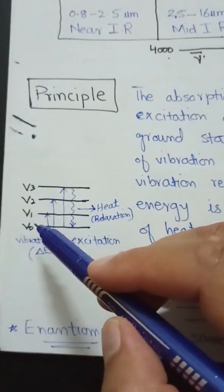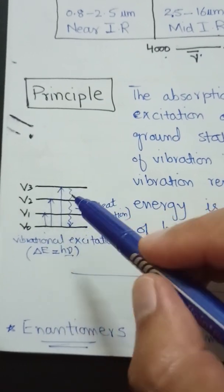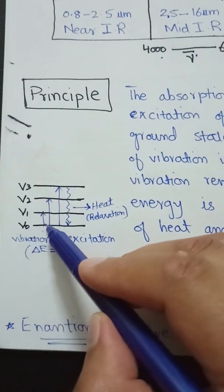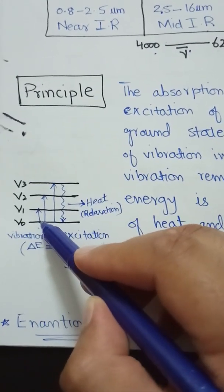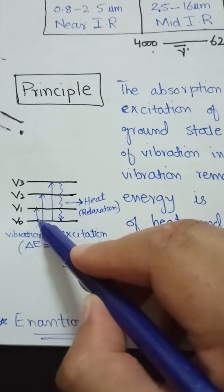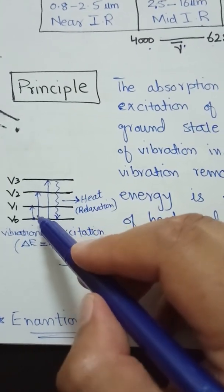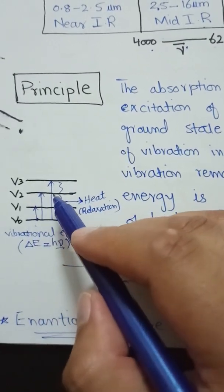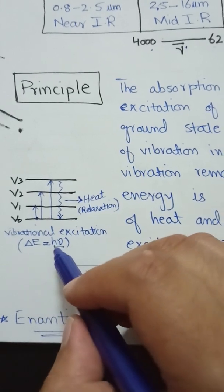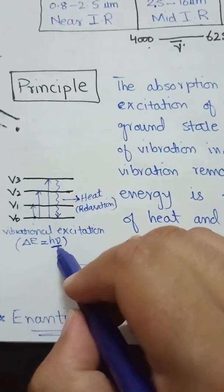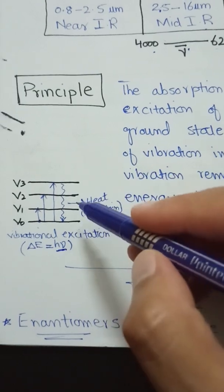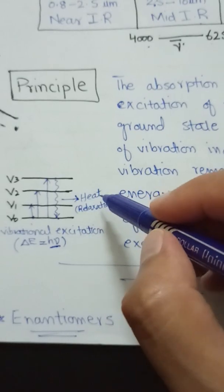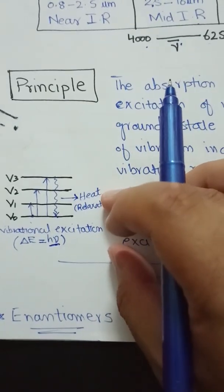Looking at a diagram showing different vibrational energy levels: the molecule gets excited when it absorbs infrared radiation, moving from the vibrational ground state to the vibrational excited state. During this absorption, the difference in energy levels is hν from Planck's equation. When it returns from the higher to the ground state, vibrational relaxation occurs.